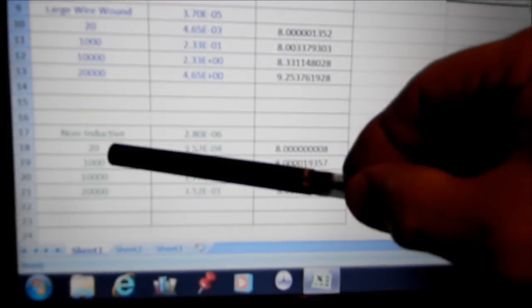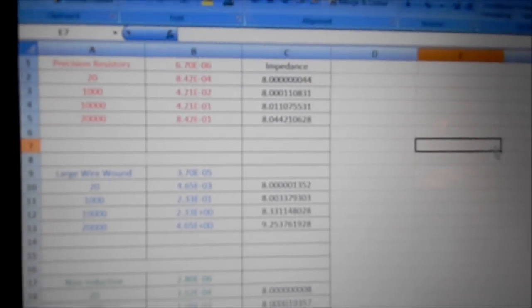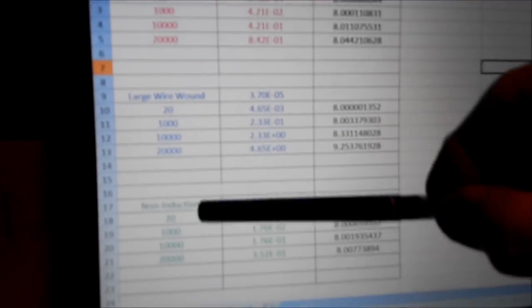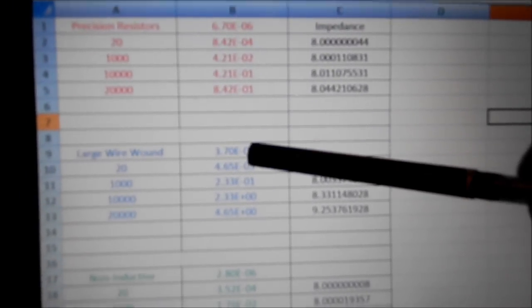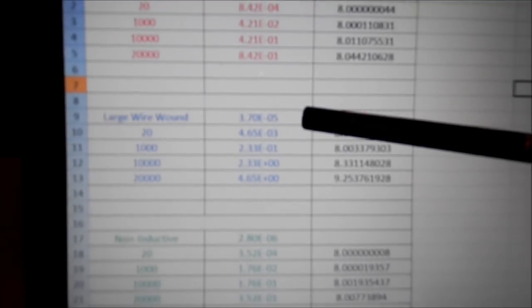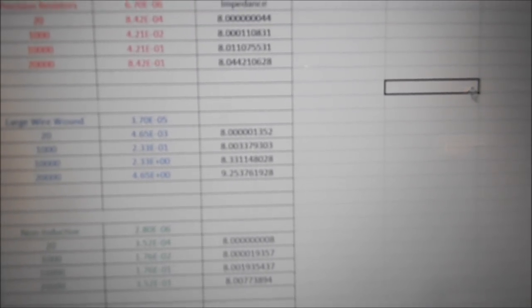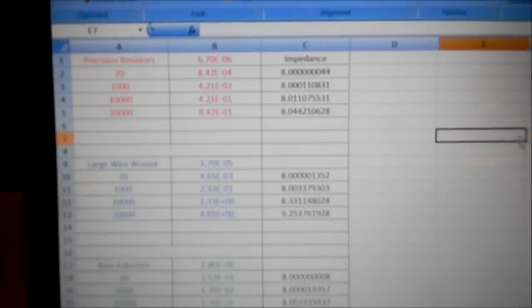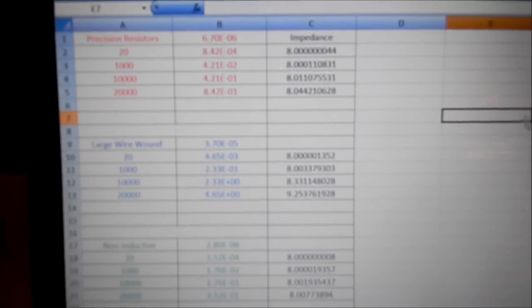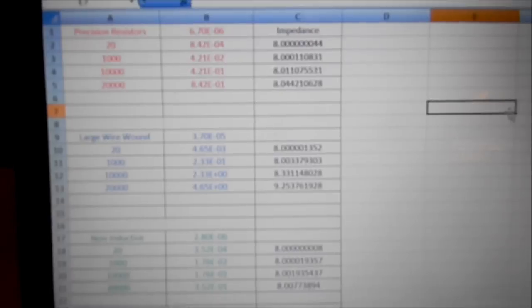At 20, 1 kHz, 10 kHz, and 20 kHz frequency - inductive reactance for the precision, the wire-wound, and the non-inductive - they all come out to be 8 ohms except in the worst case where we have 37 microhenries for the large wire-wound at 20 kHz. We get 9.25 ohms, which is still okay.